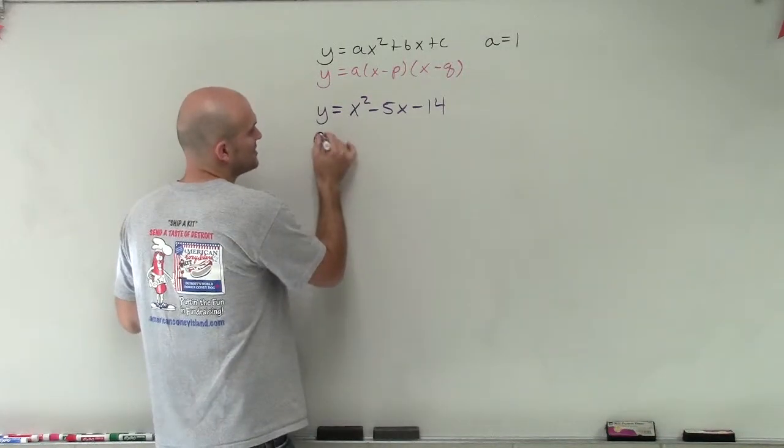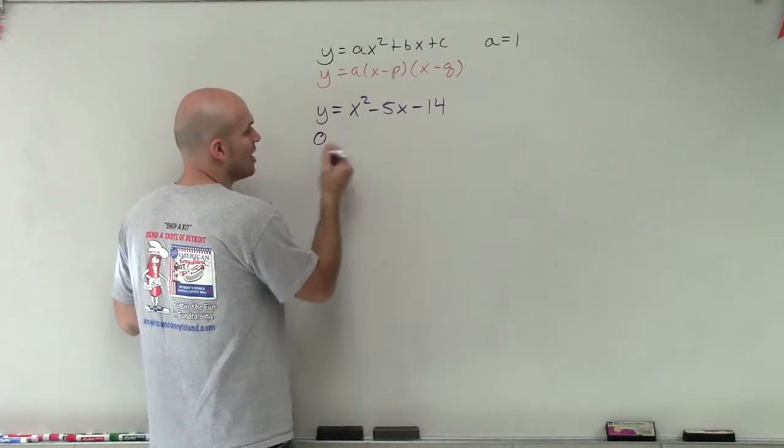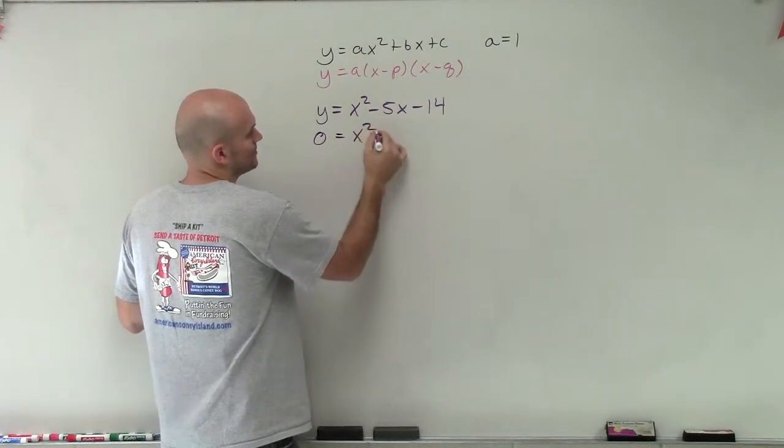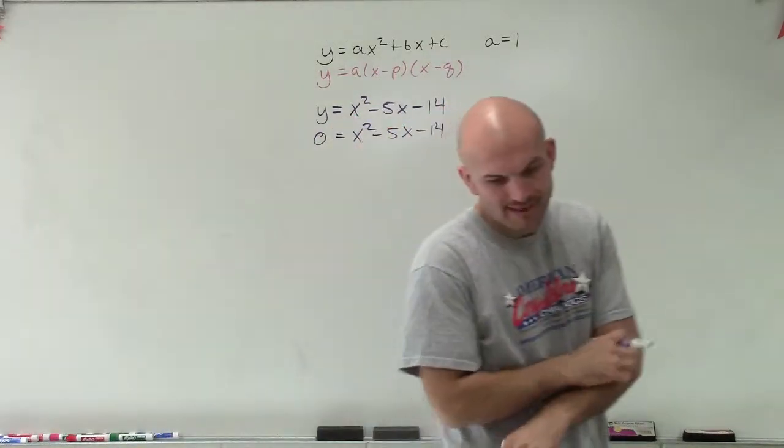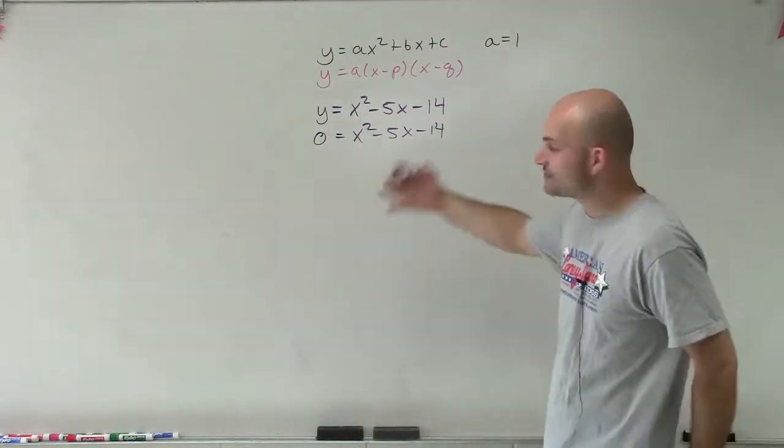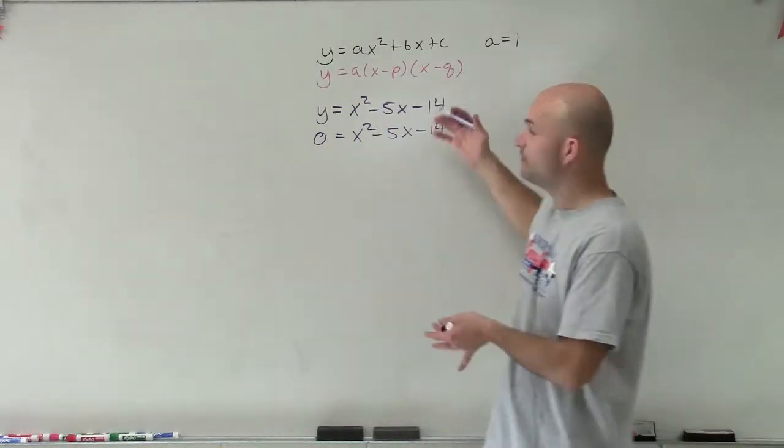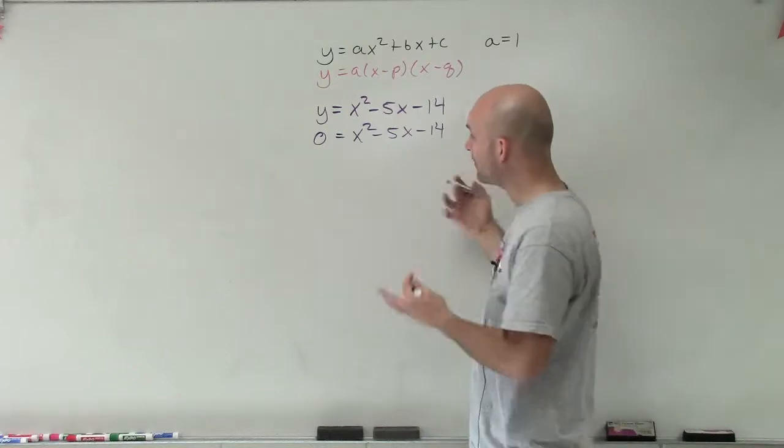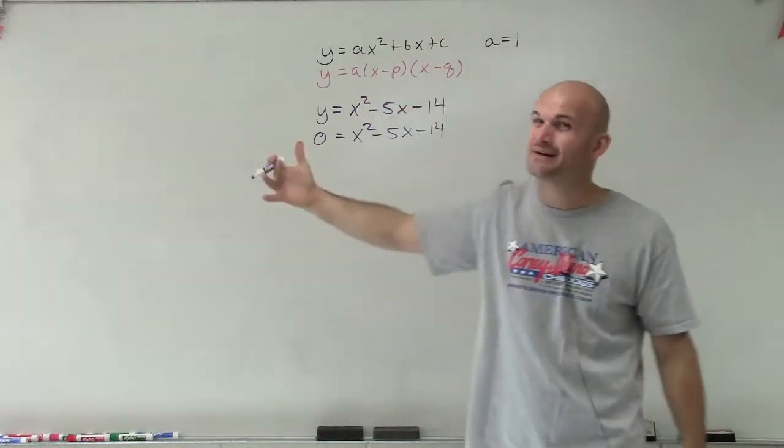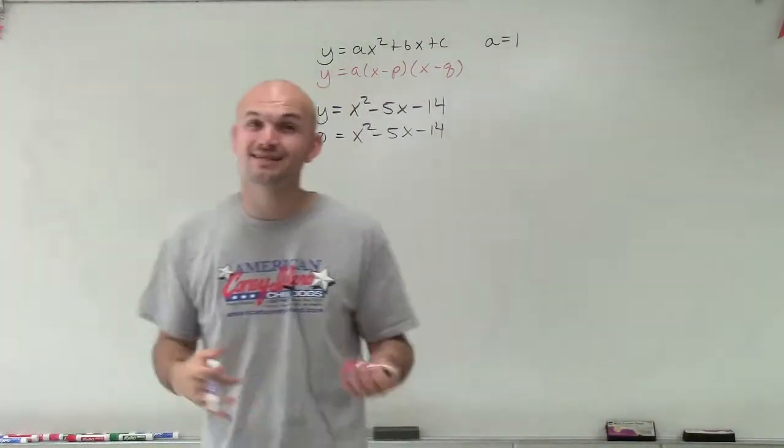So to solve this, the first thing we need to do is we need to replace our y, or our output value, with 0. OK, so now what we need to do is solve this. Now, when using inverse operations for a linear equation, we got all the x's on one side and isolated them. But there's a problem because we have an x squared and x, and we can't combine them, nor can we just isolate them to one variable.